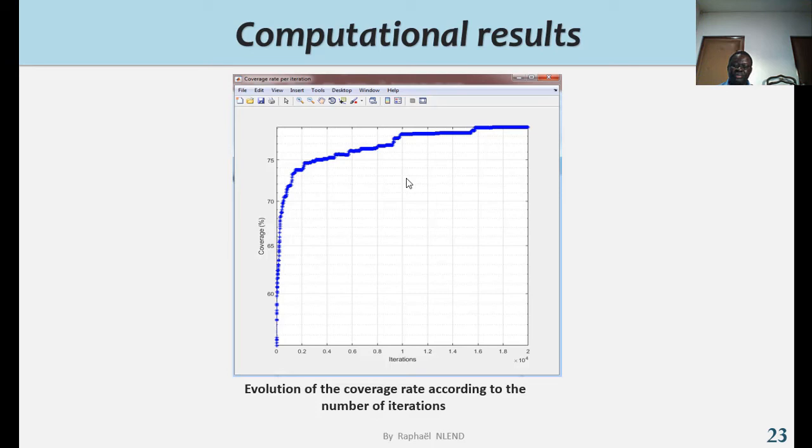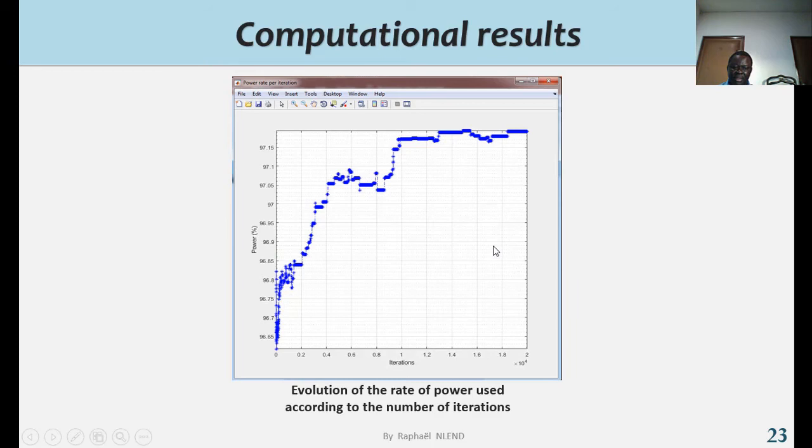We have here the evolution of the rate of power used according to the number of iterations, which grows and converges around 97.2 percent, giving way for an economy of 2.8 percent on activated sites.